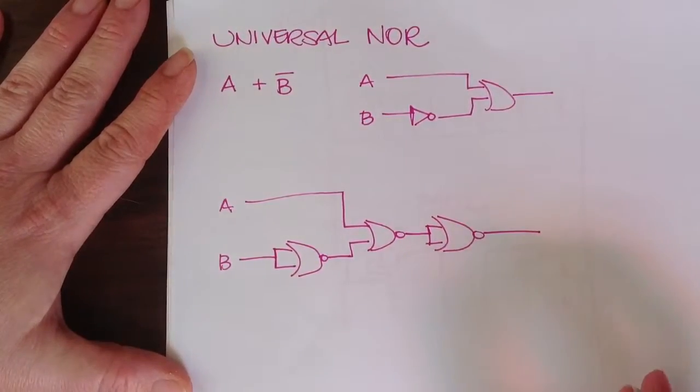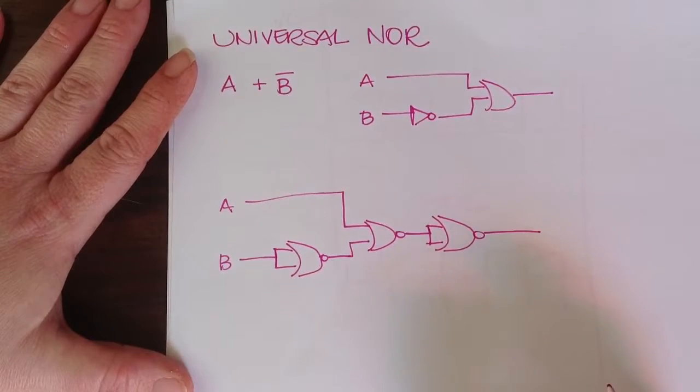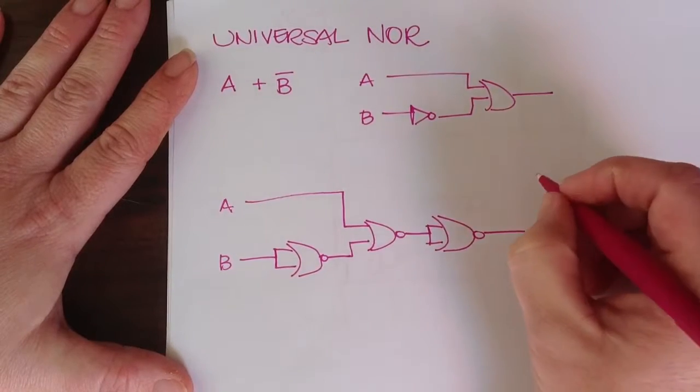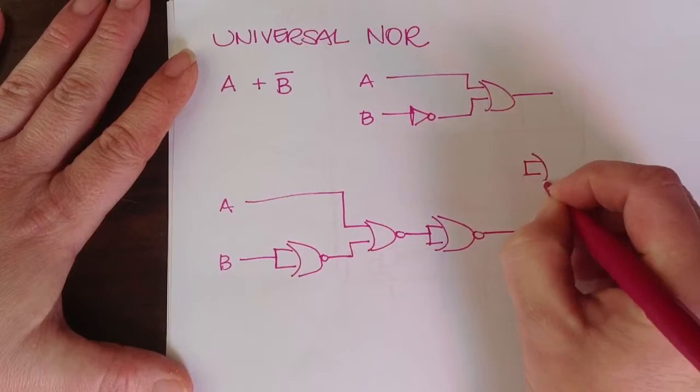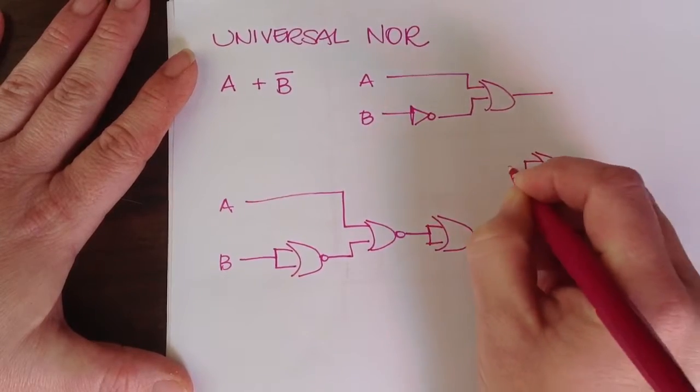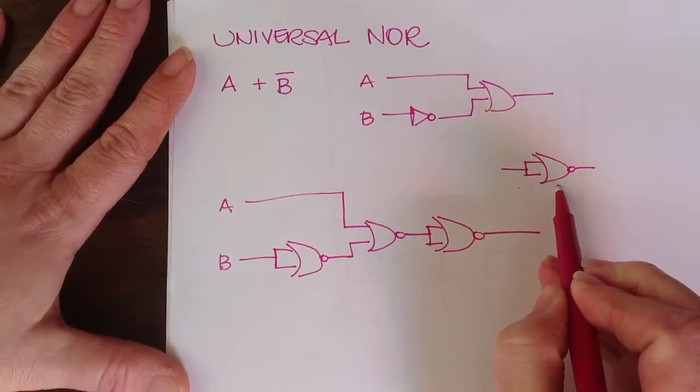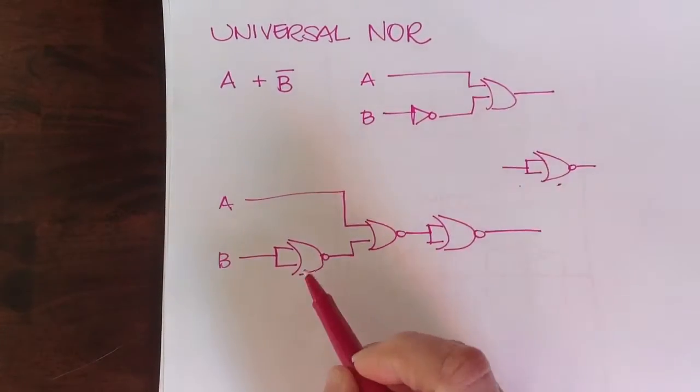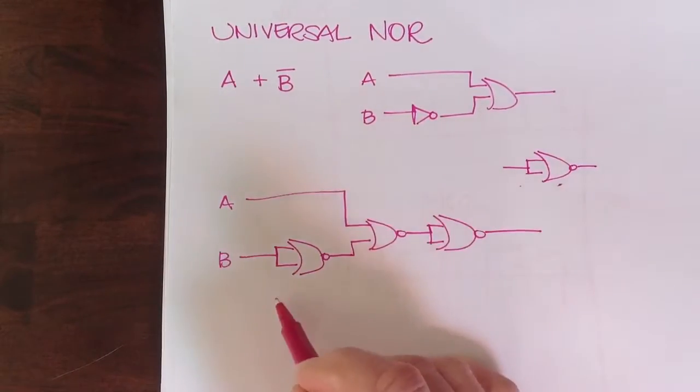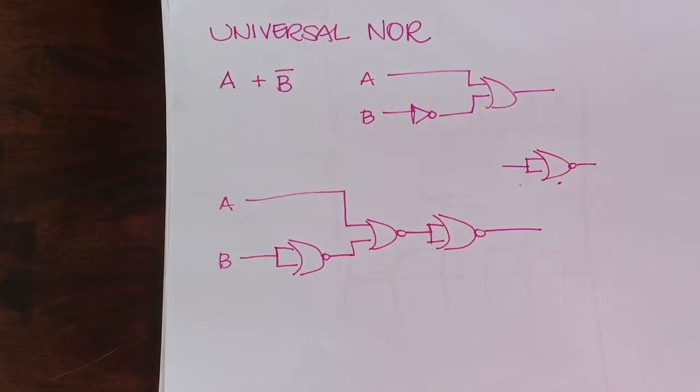And so now I would go back and look for any places I had just the lone inverter back-to-back, no matter where it came from. So I'm looking for two of these back-to-back, but as I go through here, I don't have any, so this would be my final answer for A or not B in the universal NOR gate.